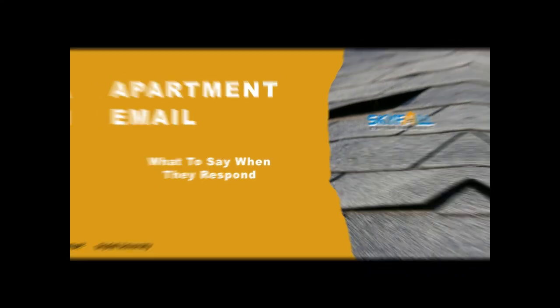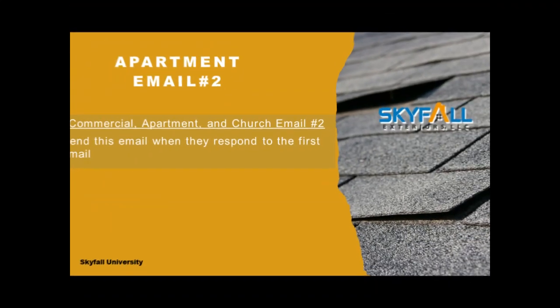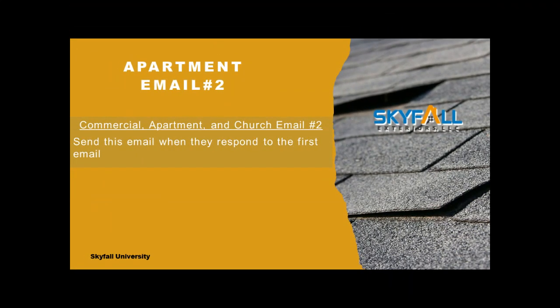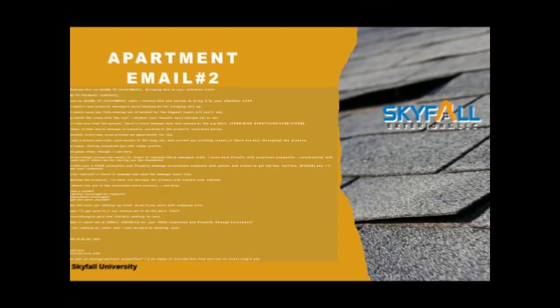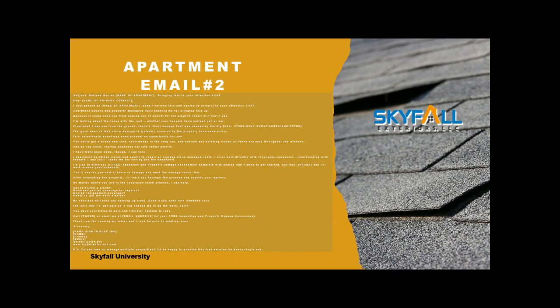Apartment email number two. So this is after you sent the first one — this is how you want to send them a second one. Here's the subject line: 'Hey, I noticed missing shingles on ABC Apartment Complex — bringing this to your attention ASAP.'